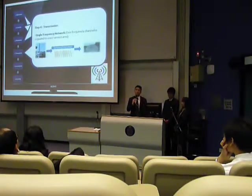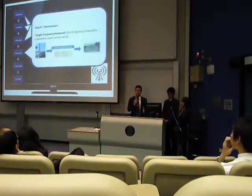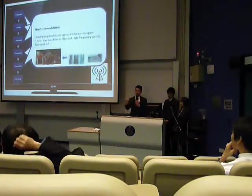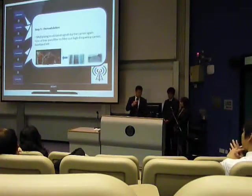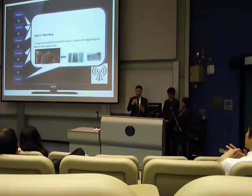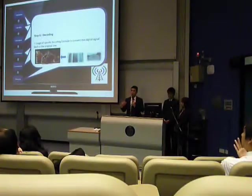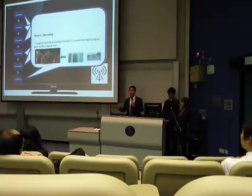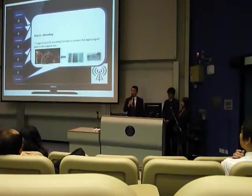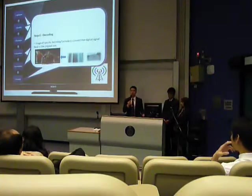The fourth step is transmission. Different from analog TV, digital TV uses a single frequency network, meaning different transmitters transmit the same signal on the same frequency channel, making efficient use of spectrum. The fifth step is demodulation — taking back the signal from the carrier using a low-pass filter. The final step is decoding, where digital signals are converted back to analog signals. If you have a traditional TV, you can buy a set-top box to do this conversion, but nowadays many TVs have a built-in decoder inside.